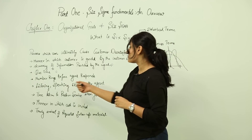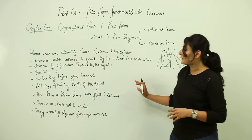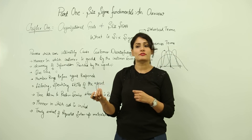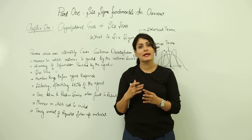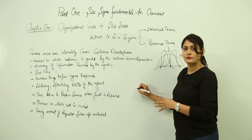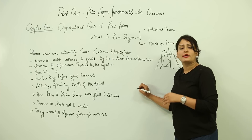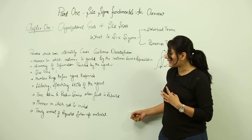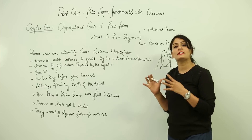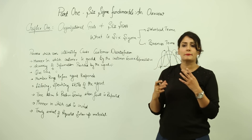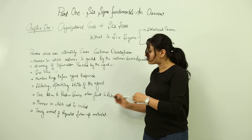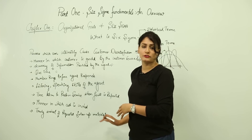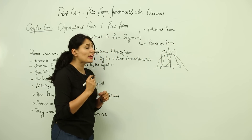Other key sub-processes include the listening and speaking skills of the agent, the time taken to restore the service when a fault is reported, the manner in which the call is ended, and the timely arrival of requested follow-up material. If these are delayed or handled poorly, they all lead to customer dissatisfaction.